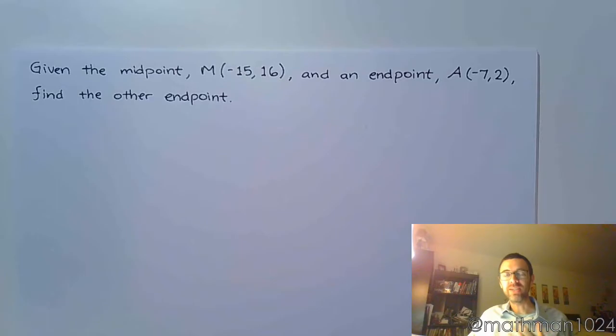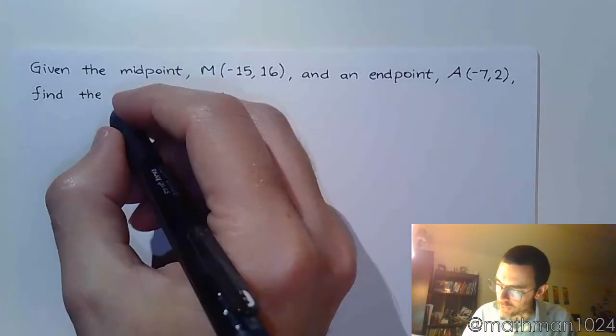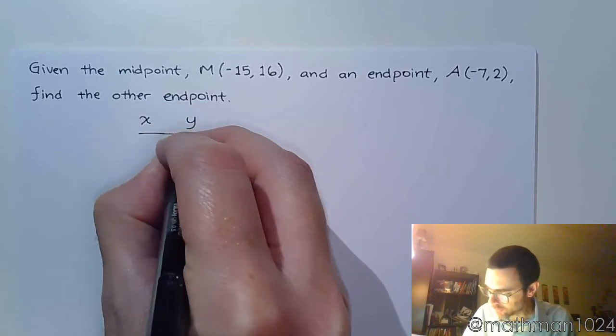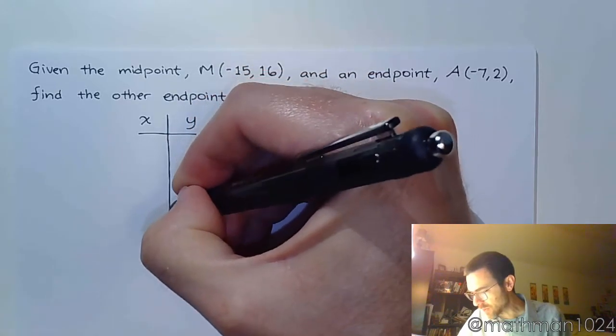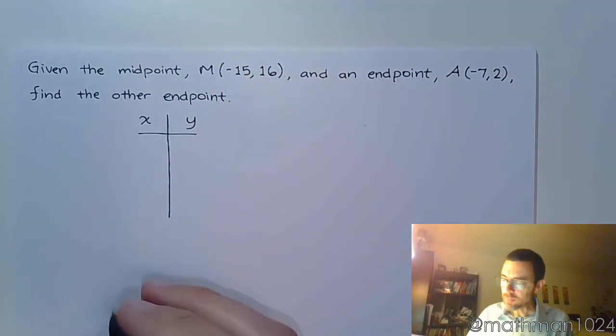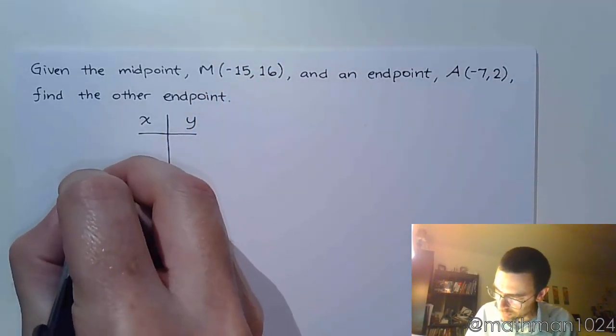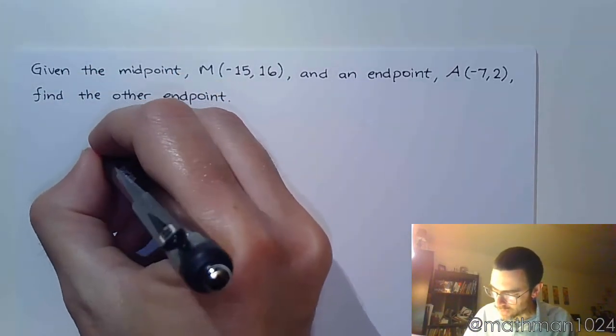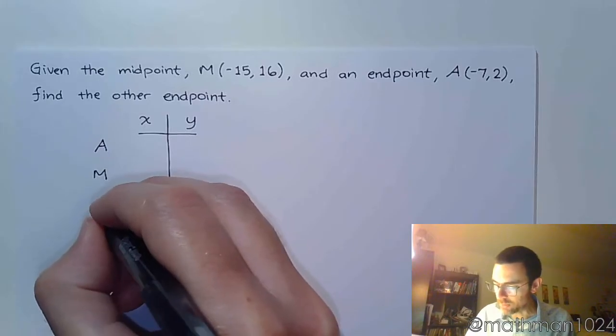It just requires you to be able to find the difference between different sets of coordinates. I like to look at this in a t-table of values. When we think about how the line segment works, your midpoint is going to be in the middle. And we expect there to be both an endpoint, let's call it A, and another endpoint, let's call it B.